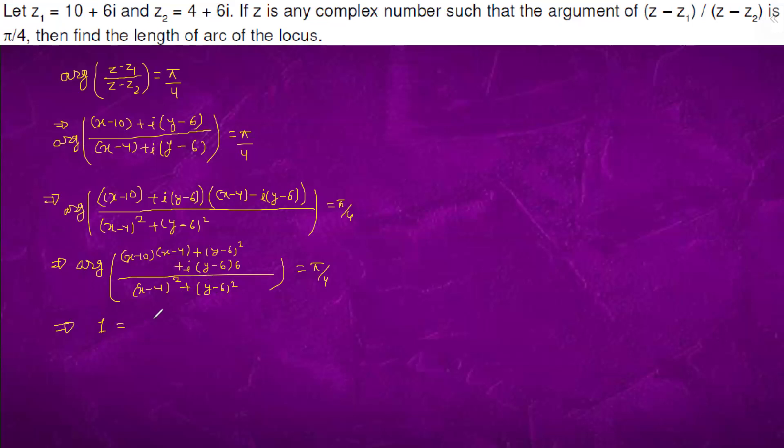Since tan(θ) is 1, it will be y over x. So iota times (6(y - 6)) divided by (x² - 14x + 40 + y² - 12y + 36).